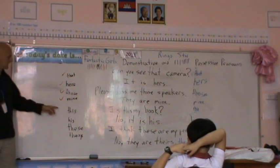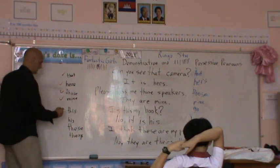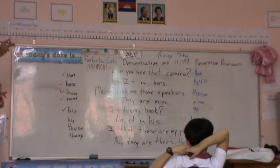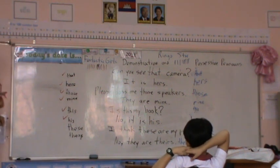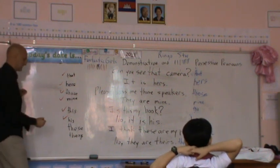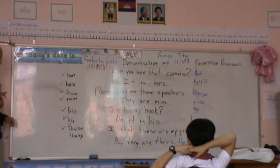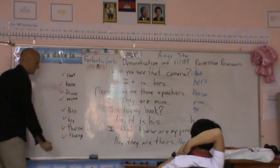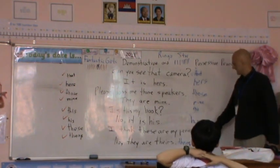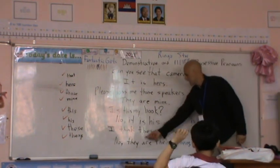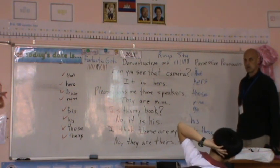This. Okay. Is this my book? No. His. Okay. I think these are my pencils. No, wrong again. They are theirs. It's got to be pencils — pencils for plural, right? If it's 'these,' then it has to be plural. Pencils for plural.